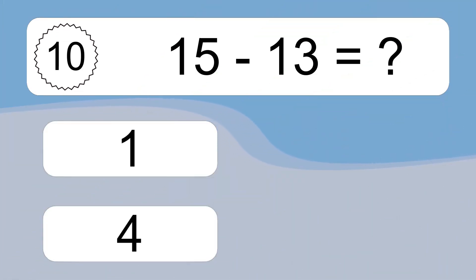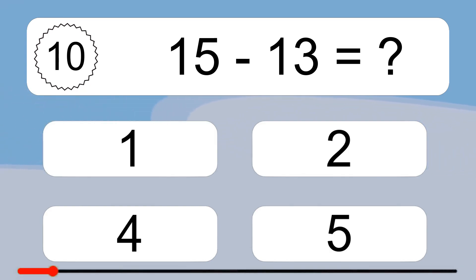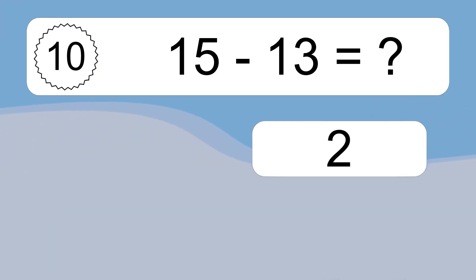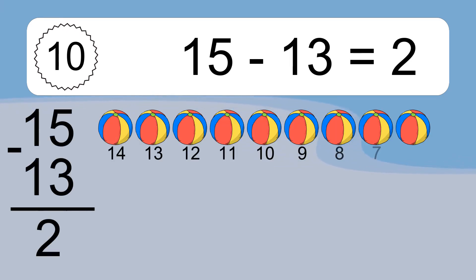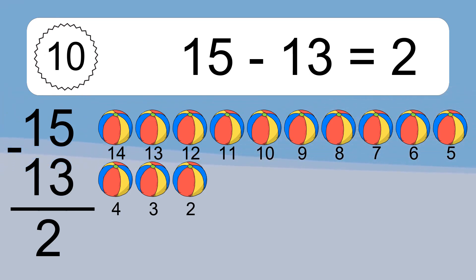15 minus 13 equals what? 15 minus 13 equals 2. Let's count it: 14, 13, 12, 11, 10, 9, 8, 7, 6, 5, 4, 3, 2.